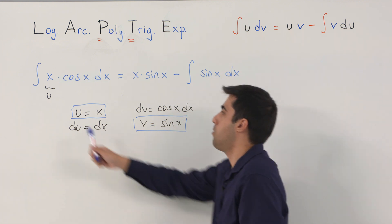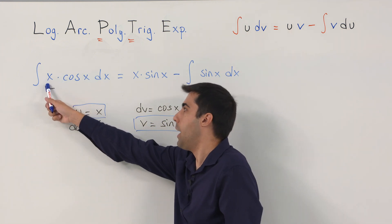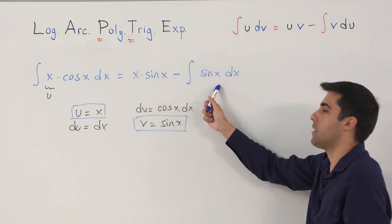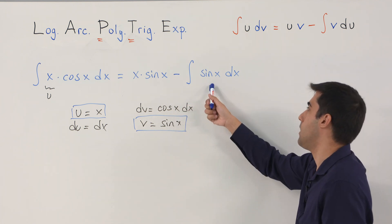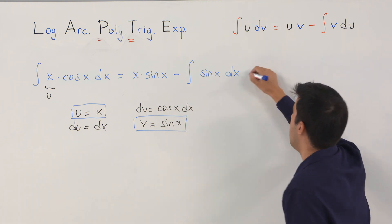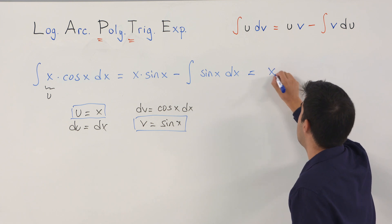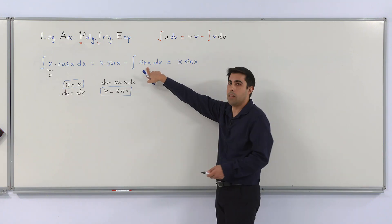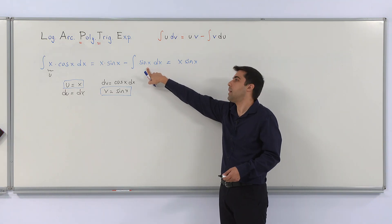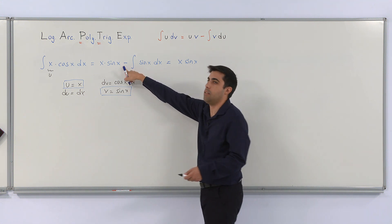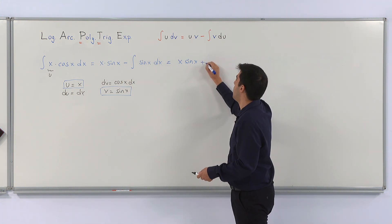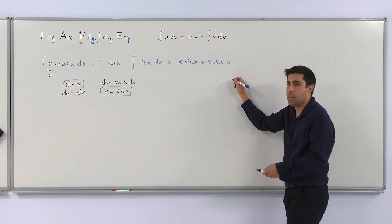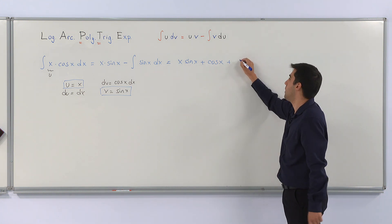Applying integration by parts, this integral equals u times v, which is x times sine(x), minus the integral of v, which is sine(x), times du, which is dx. The factor x has disappeared in the second integral, so we can easily integrate that. We have x times sine(x). The integral of sine(x) is minus cosine(x), so the result is x times sine(x) plus cosine(x) plus c.